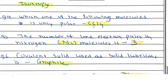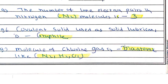CCl4 is a nonpolar molecule. The number of lone pairs of electrons in nitrogen is three, meaning six total lone-pair electrons are present in the nitrogen molecule. The covalent solid used as a solid lubricant is graphite, which is an example of a covalent solid.